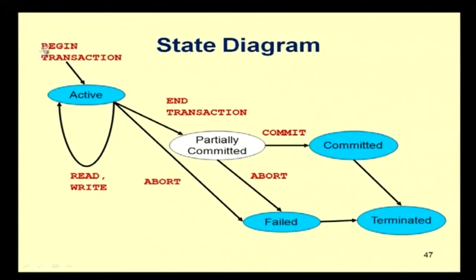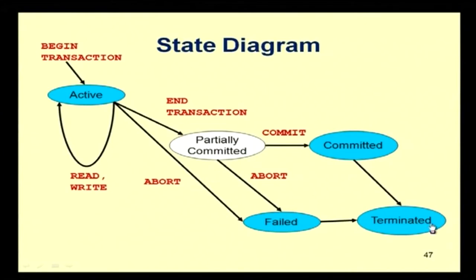From the partially committed state there are two options: commit or abort. Commit means whatever changes were made will be permanently stored on disk, and the transaction becomes committed. If aborted for any reason, it becomes failed. Whether committed or failed, the transaction finally goes to the terminated state — meaning it has either completed and committed, or not completed and failed, or partially completed but aborted.